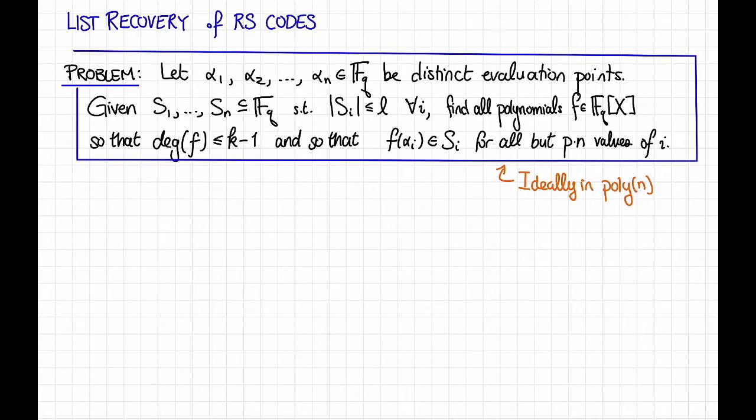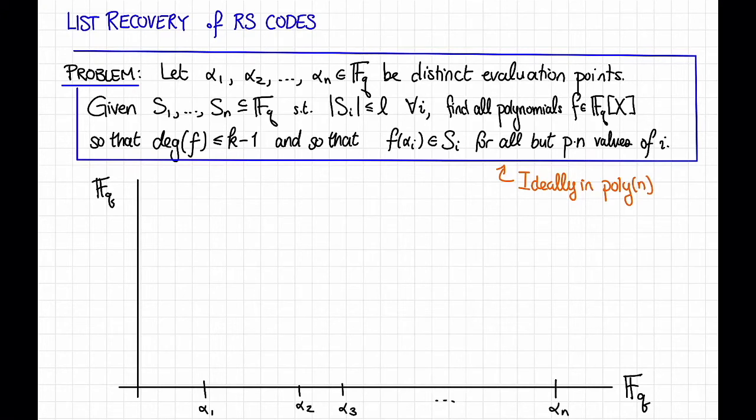We can draw a picture of this problem as follows. So down here on the x-axis I'm going to draw Fq, and on the y-axis this is also Fq, and I'm going to imagine plotting a polynomial as though this were the evaluation points alpha1, alpha2, alpha3, and so on. Let's just pretend it makes sense to lay Fq out on a line like this. Of course it does not. And now for each evaluation point we have a set Si of possible values that a polynomial could take at that evaluation point. So for example if little l were equal to 2, maybe my values would look like this.